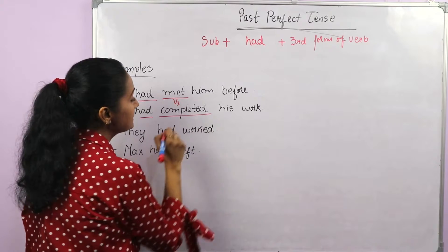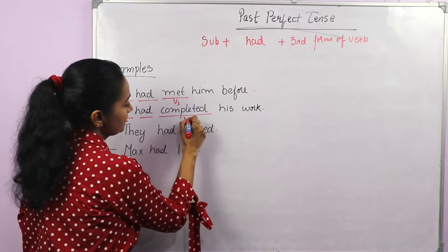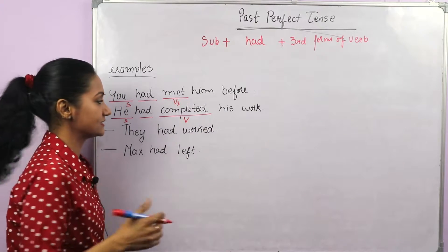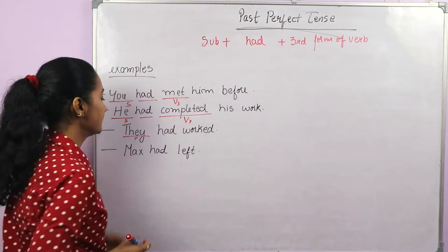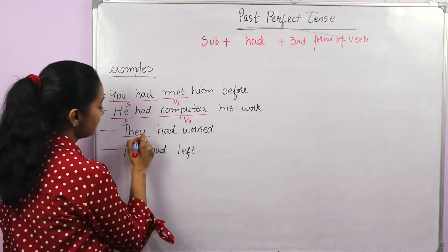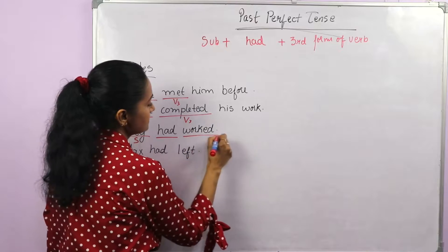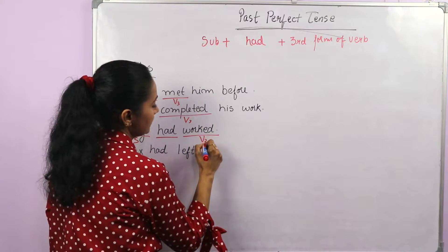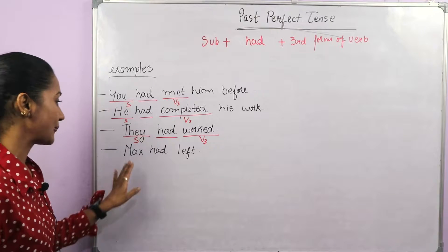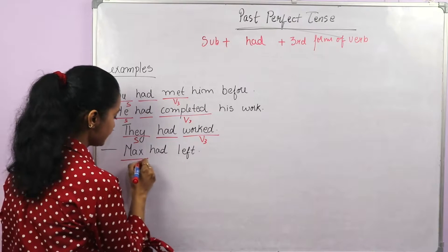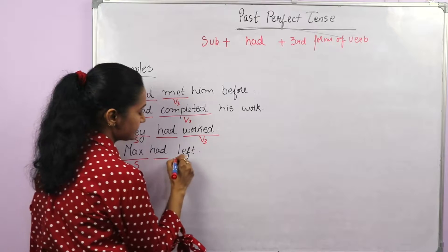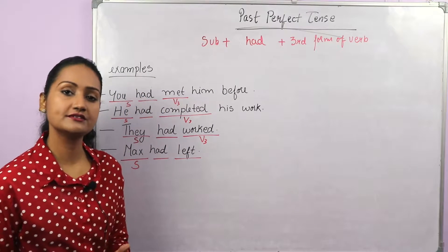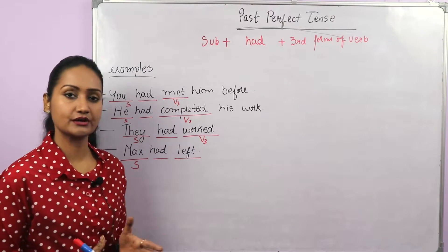So 'he' is the subject, then 'had', and 'complete' is the verb. The third form of 'complete' is 'completed' — complete, completed, completed. Next: 'They had worked.' Again, 'they' is the subject, then 'had', and 'work' is the verb. The third form of 'work' is 'worked'. Next: 'Max had left.' So 'Max' is the subject, 'had', and the verb is 'leave' — second and third form of 'leave' is 'left'. This is an irregular verb.